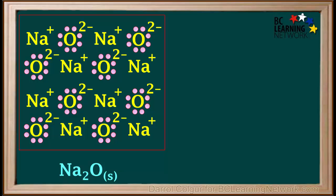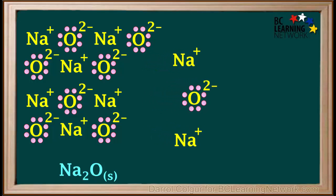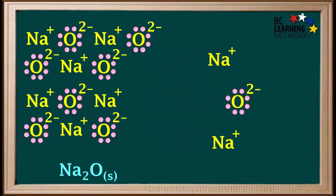Ionic compounds exist as crystal lattices made up of ions. Here we imagine a small sample of the crystal lattice of sodium oxide, Na2O solid. When solid Na2O is dissolved in water, dissociation occurs, where sodium ions and oxide ions leave the crystal.